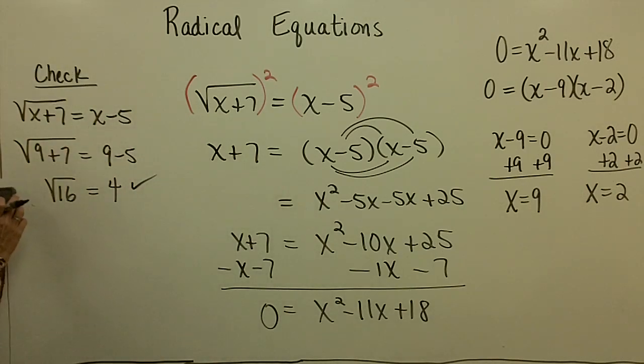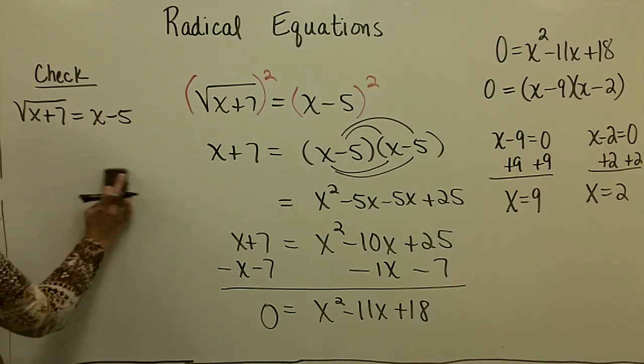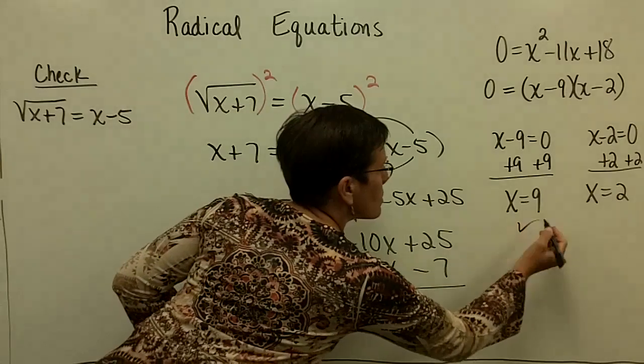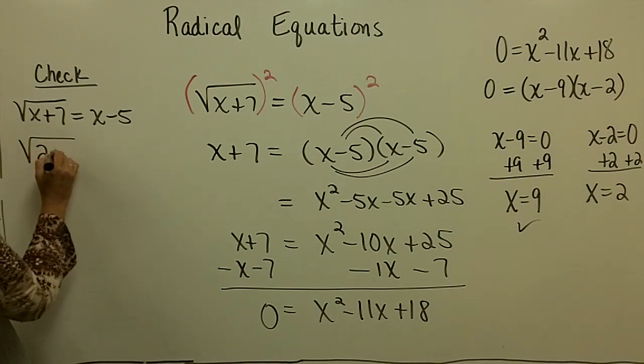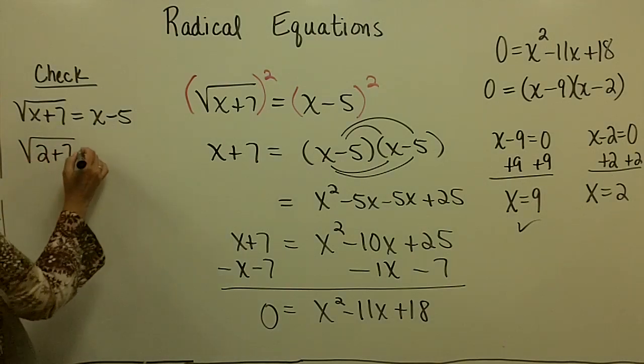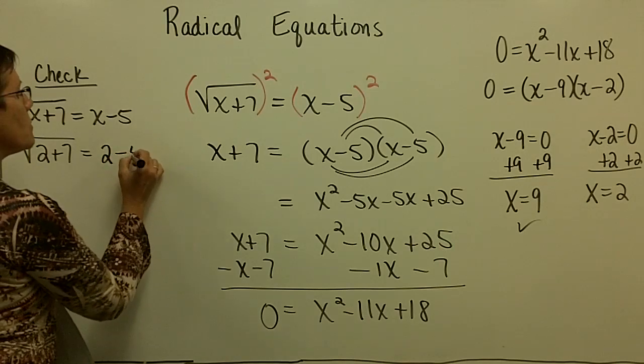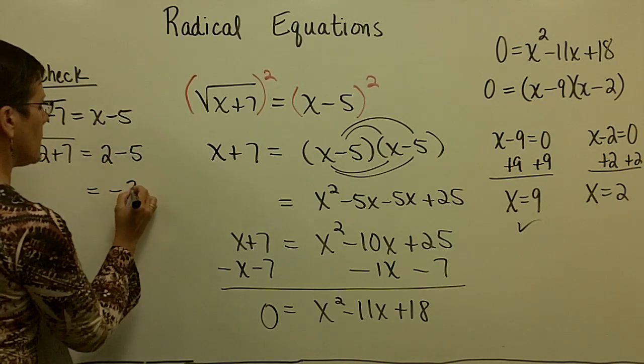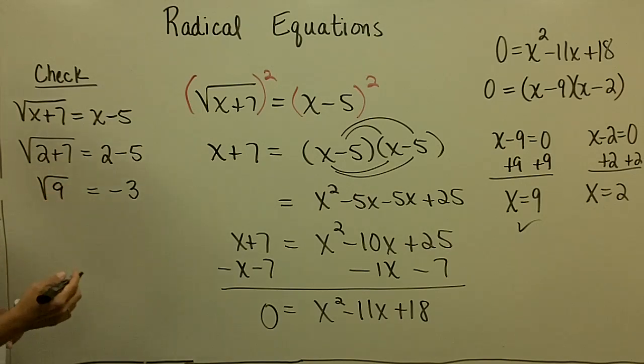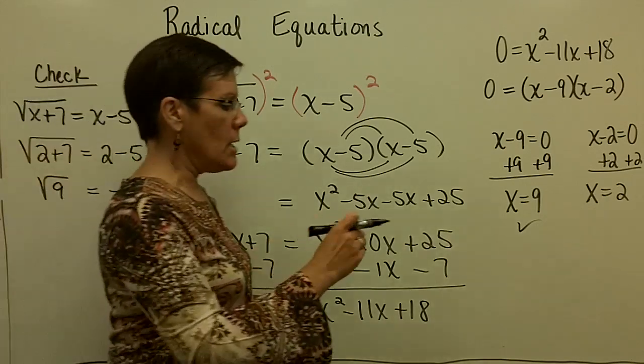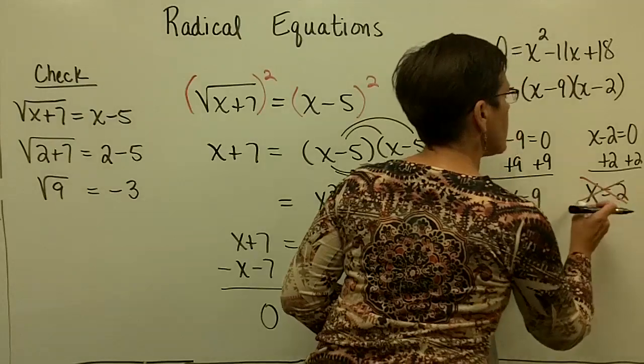I'm going to erase this, and I'm going to put the 2 in for x. So we know this answer is good. When we put in a 2 here for x, we have 2 plus 7, which is 9. And the square root of 9 is 3. When I put a 2 here, 2 minus 5 is a negative 3. And the square root of 9 equals a positive 3, not a negative 3.